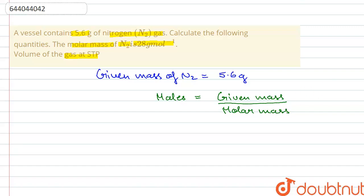So if we substitute the values, the given mass was 5.6 and the molar mass was 28. So that comes to 0.2 moles.